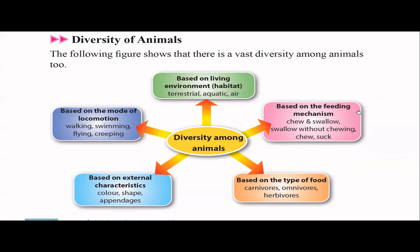Another way to categorize animals is based on their feeding mechanism. Some animals chew and swallow. Some swallow without chewing first — like cows, which initially swallow and then do the chewing later. Some animals suck their food, like butterflies that suck nectar. So there are different ways of eating.